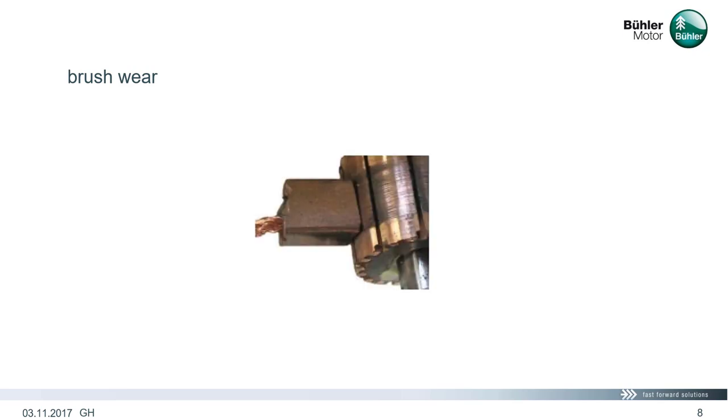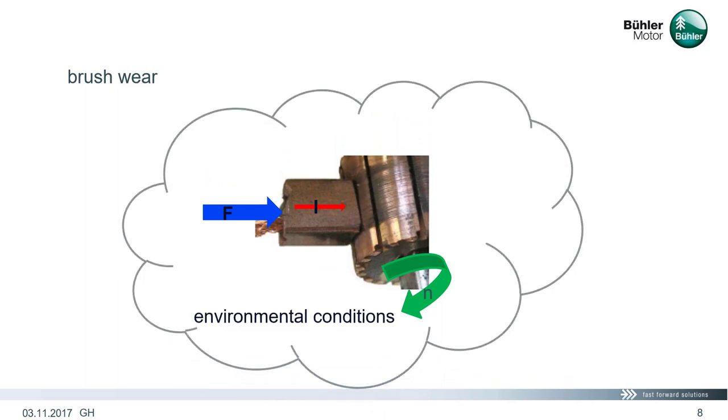We have seen that the geometrical length of the brush is determined by the motor construction. The brush wear on the other hand side is determined by the application conditions. The main impact on the brush wear has the operational speed of the motor, the force of the brush spring and the current draw of the motor.